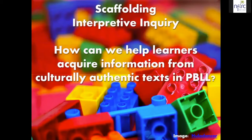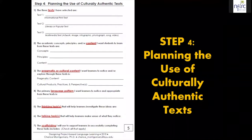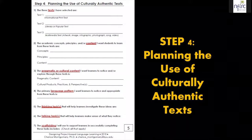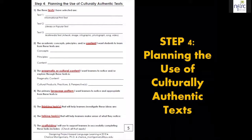Now that we know what scaffolding is, why we need it, and how we can locate culturally authentic texts, how do we help learners to acquire information from those texts? In your packet you'll see a worksheet that asks you to list the texts you've selected, think about what kind of content you want students to pull out of these texts — is it cultural, is it academic — and what specific cultural content or language patterns you want them to think about.